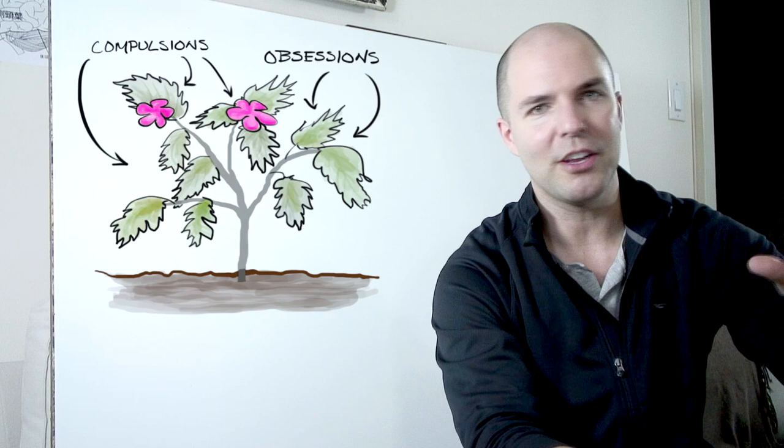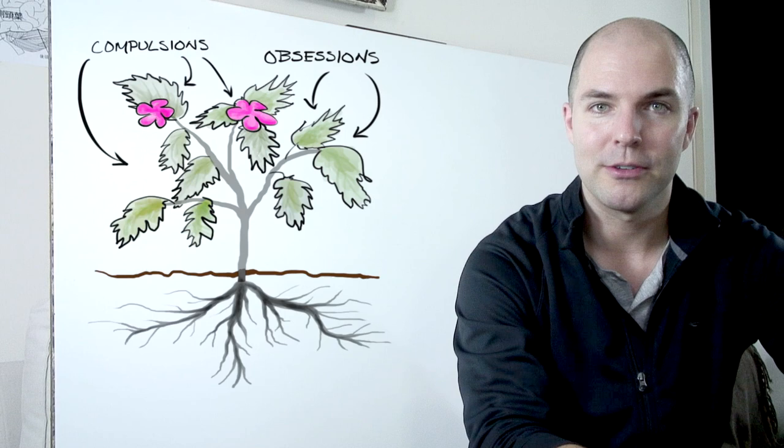But in this model, there's another big component. So if the obsessions and the compulsions are the stuff you can see coming out of the ground, what you can't see are the roots.